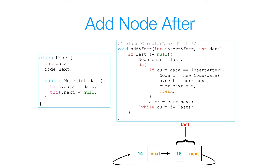Here's the solution. I have a method called addAfter that takes in two arguments: the data we want to insert after, and the data we want to insert. I make a check to see if last is equal to null — in that case there's no node to add after, so I simply exit. Otherwise, I know there's something to traverse. I check if last is not equal to null, and I have a reference called cur set to the last node to traverse the list.